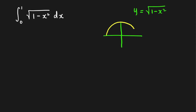The graph is a semicircle of radius 1, going from negative 1 to 1 with height 1 at the top. Since we're integrating only from 0 to 1, we're looking for just one-quarter of the circle's area. Therefore, this is equal to one-fourth of the area of a circle with radius 1, which is one-fourth times pi times 1 squared, giving pi over 4.